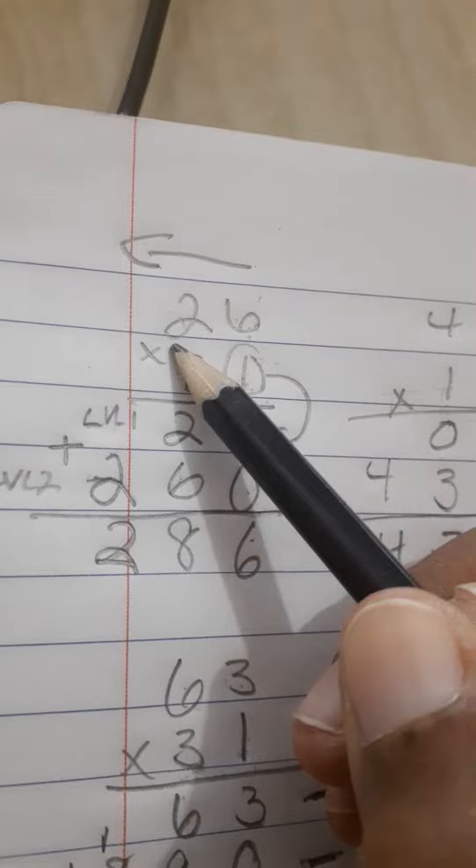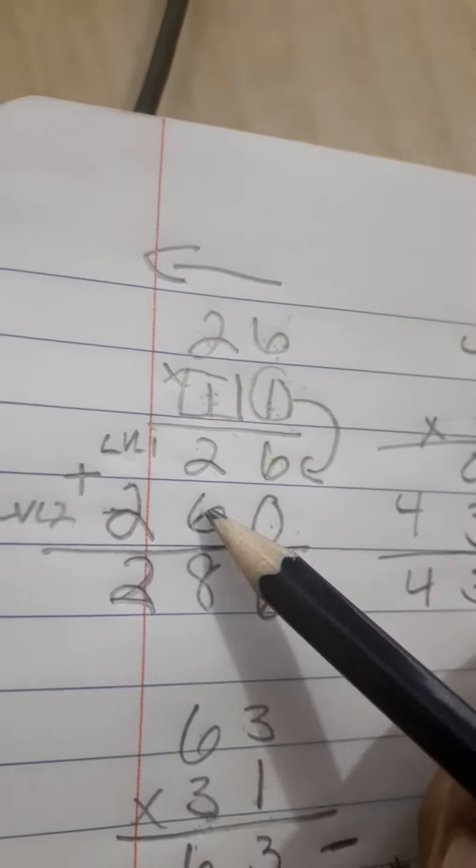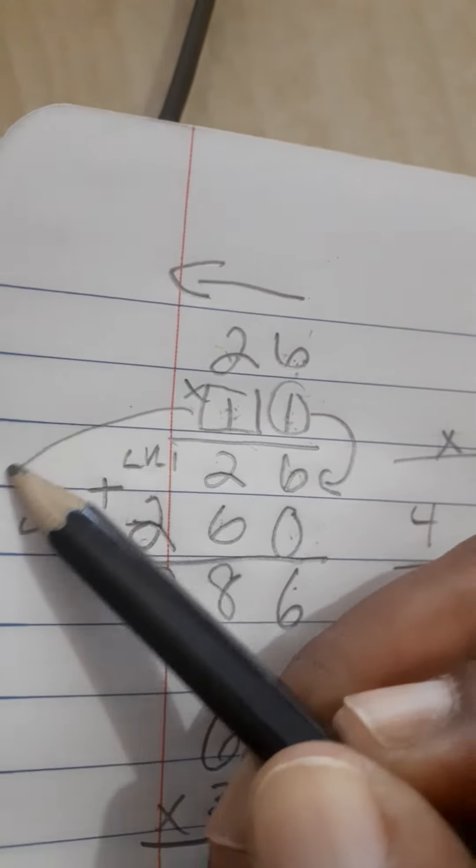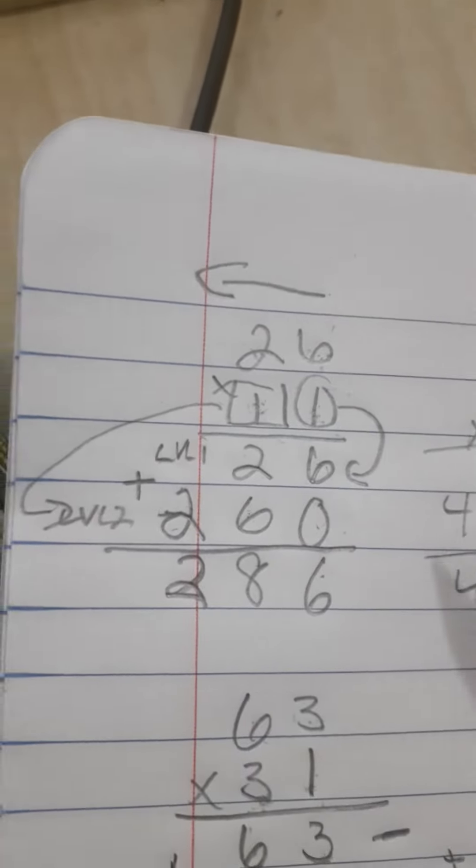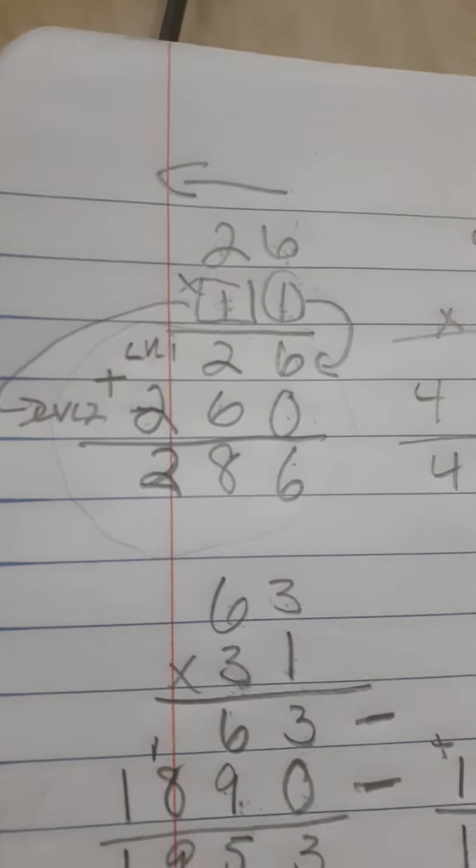And then everything multiplied on this number, 1 times 6, 1 times 2, they go on level 2. And then this becomes addition when you're done. Just a few things to remember.